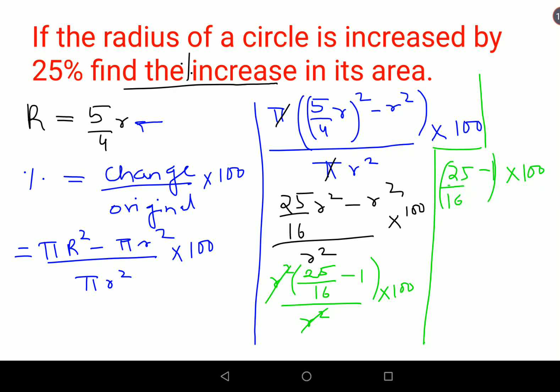So this when taken in LCM you get 25 minus 16 which is 9 upon 16 into 100. So now if you look closely this is 4za and this is 25za. Both of them go by 4 table. So you are left with 225 upon 4 which is coming out to be 56.25%.